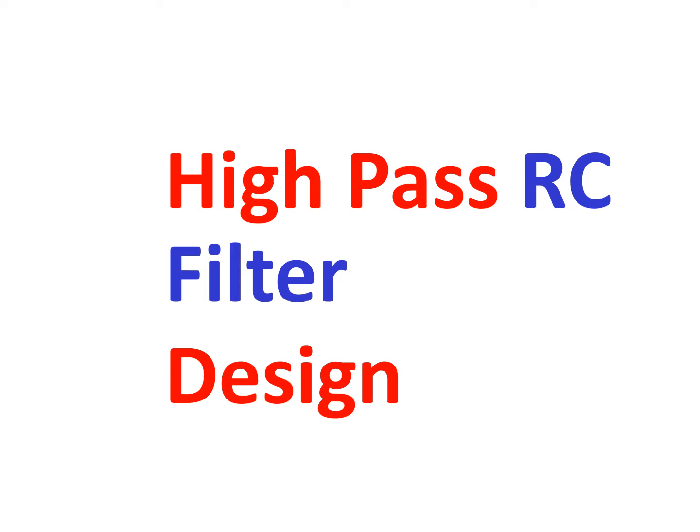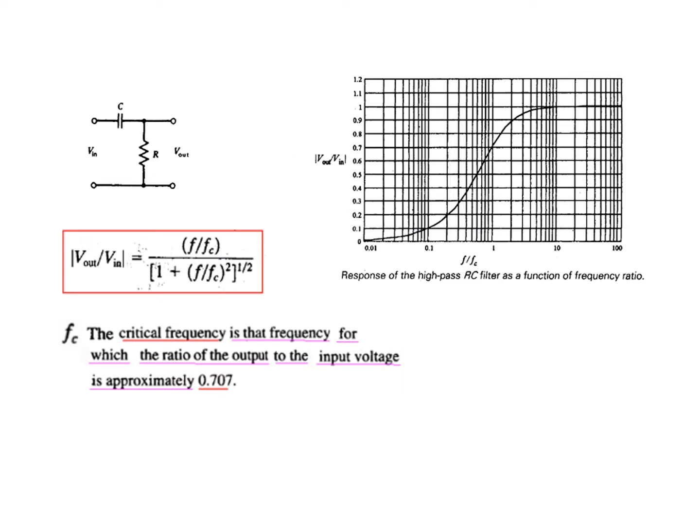In this video, we'll learn about how to design a high-pass RC filter. The basic concept is this is the high-pass filter. From the capacitor, you can see that at low frequency the capacitor behaves like an open circuit, so whatever is the input voltage will not go across, so low voltage will not pass.